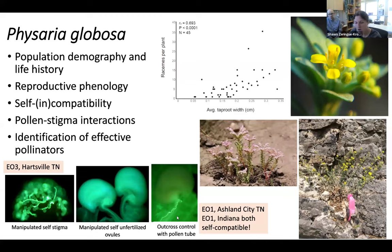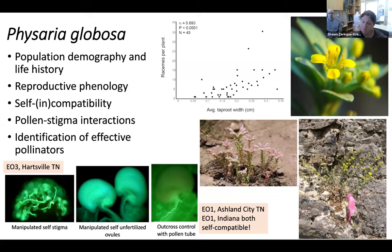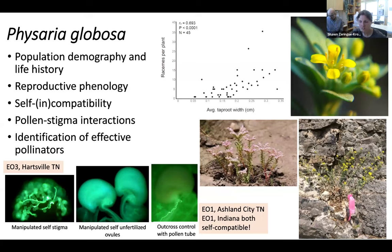When you pollinate with outcrossed pollen from other genetically different plants, you do get fertilized ovules. Interestingly, my graduate student Emily Powell, who just graduated last May, found this may not be the case for all populations. Her data from EO1 in Ashland City, Tennessee, as well as the one occurrence in Indiana, both actually exhibit self-compatibility, which is really surprising. We need to next do the Kentucky populations to understand what's going on. This plant has a long history of being somewhat isolated in unique patches, so it's not entirely surprising to see different reproductive systems across these cases.